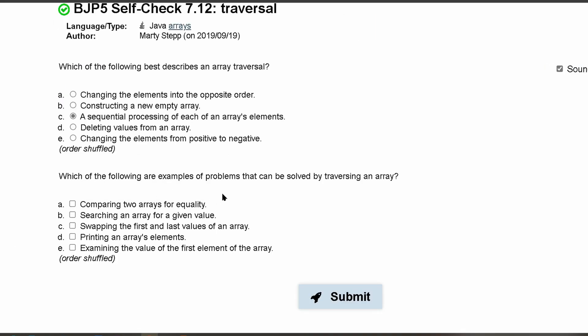Now let's continue to look at these other ones. Which of the following are examples of problems that can be solved by traversing an array? Comparing two arrays for equality—this can be solved just by looking through it. Traversing an array, that can be solved.